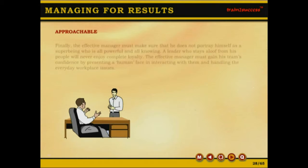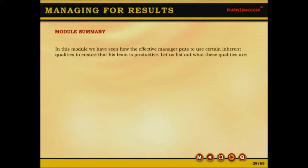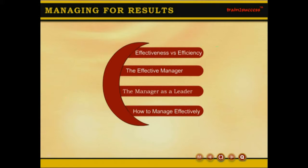Finally, the effective manager must make sure that he does not portray himself as a super-being who is all-powerful and all-knowing. A leader who stays aloof from his people will never enjoy complete loyalty. The effective manager must gain his team's confidence by presenting a human face in interacting with them and handling everyday workplace issues. In this module, we have seen how the effective manager puts to use certain inherent qualities: Responsible, Committed, Innovative, Approachable, and Flexible.